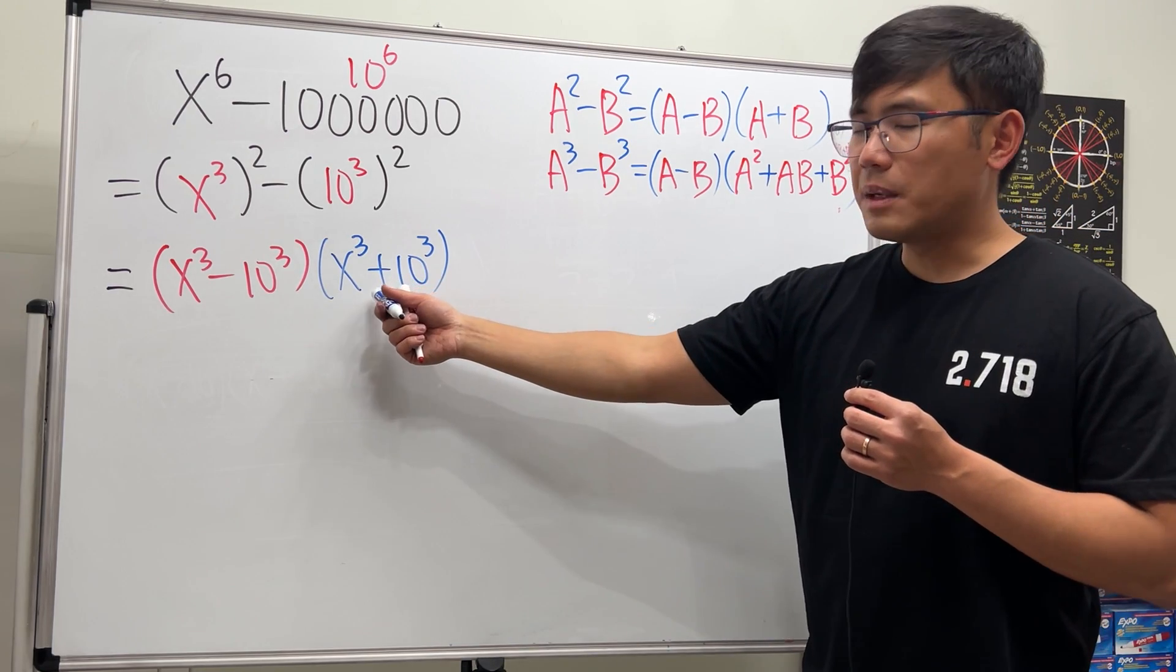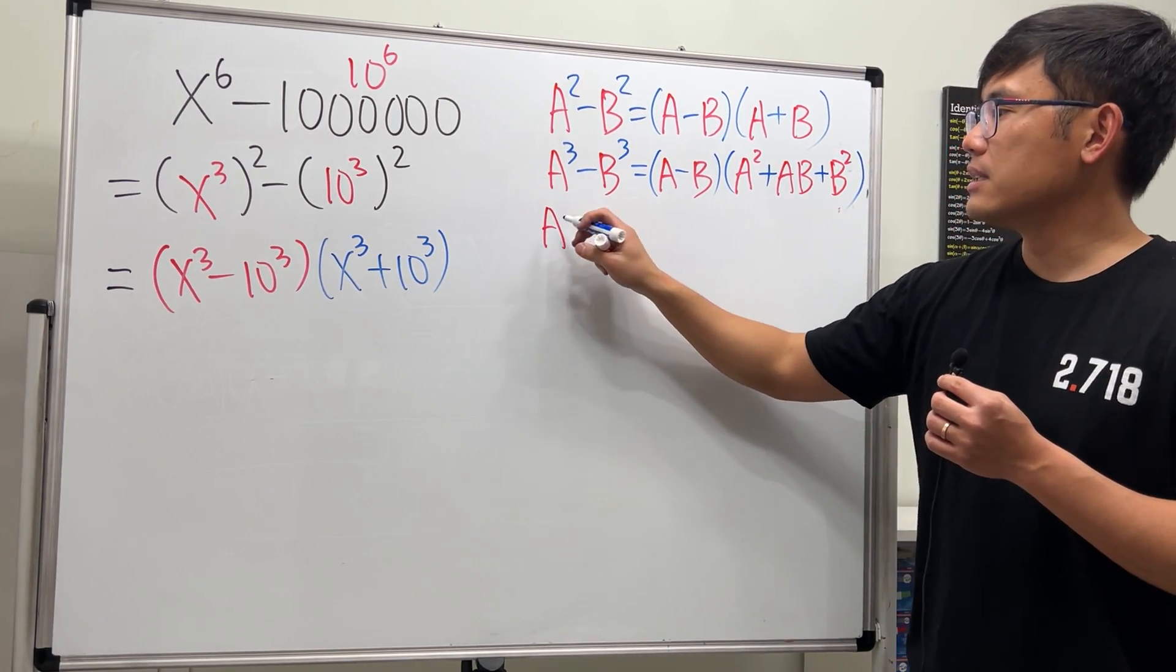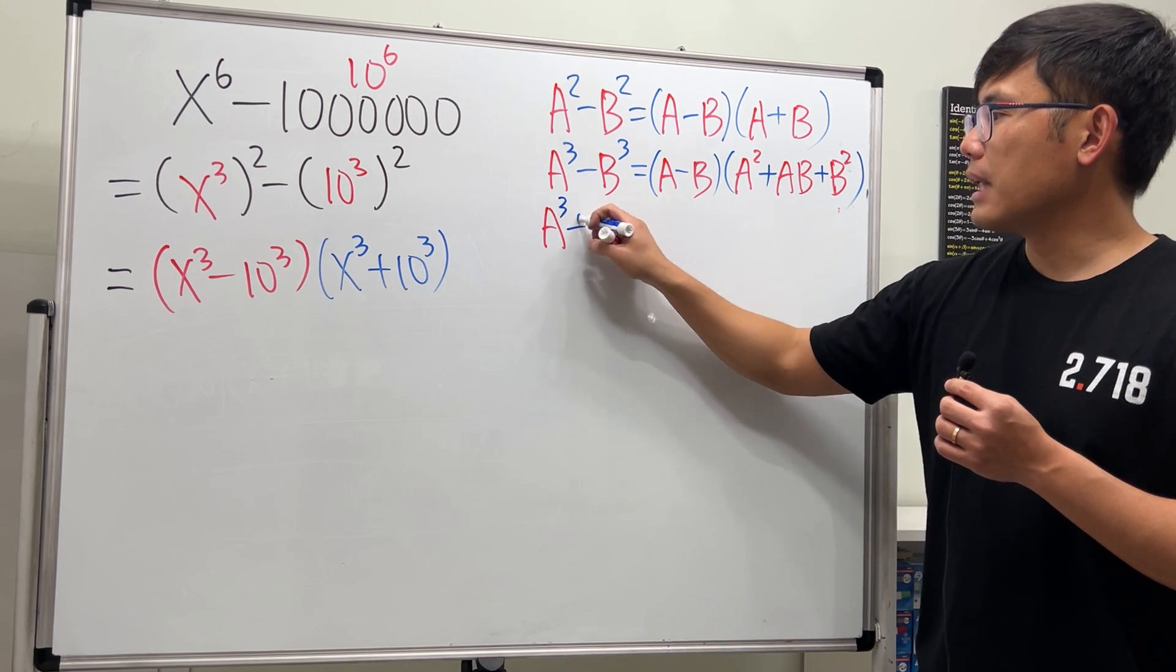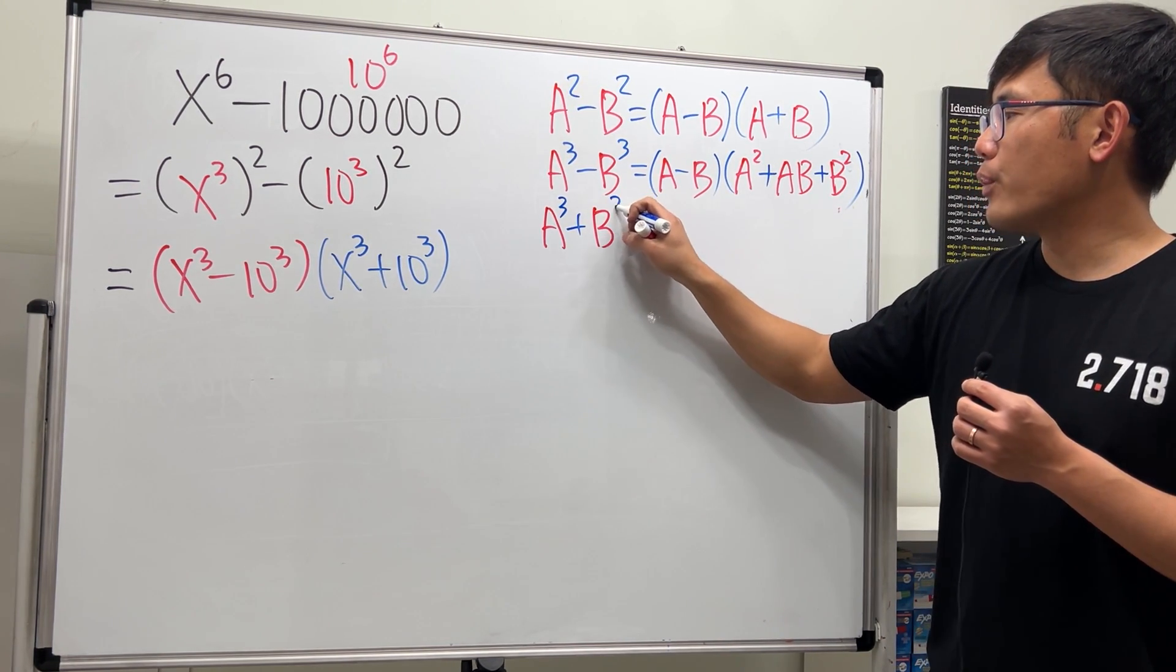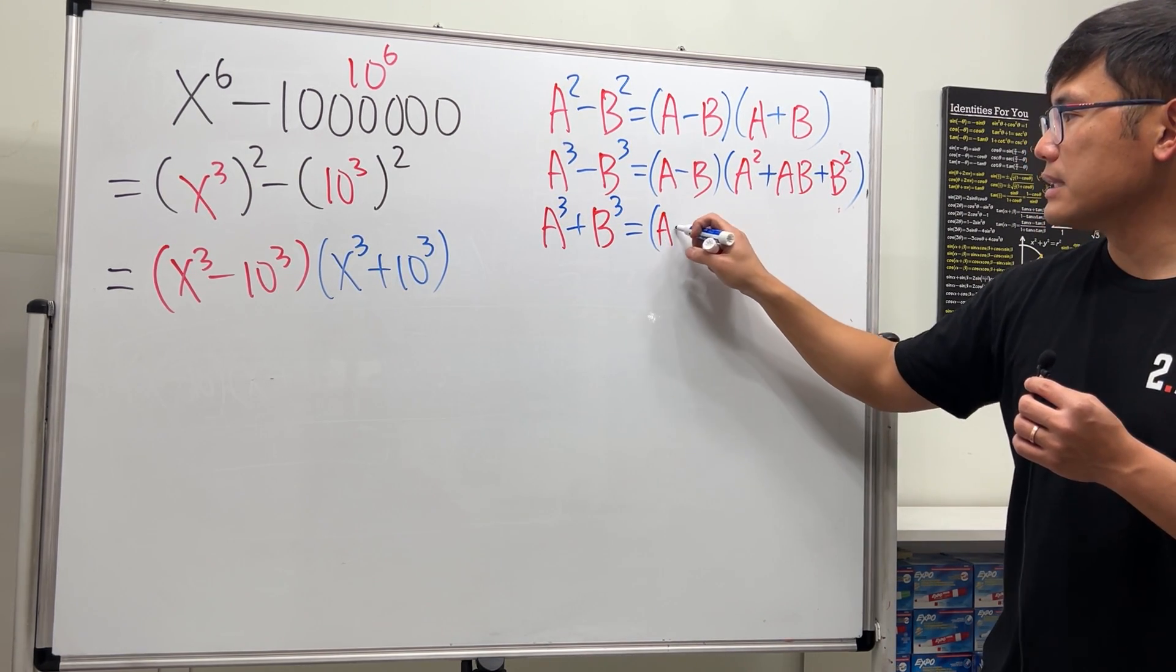And when we have the sum of two cubes, it's very similar, but I just have to be careful with the signs. a to the 3rd power plus b to the 3rd power equals plus plus, so a plus b,